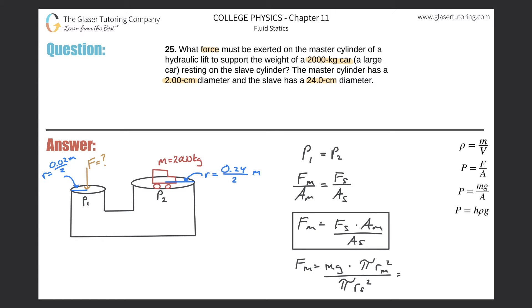All we have to do is now plug in the values. So the mass of the car is 2,000 kilograms, gravity is 9.8. We can actually cancel the π's because that'll simplify it a little bit. Then that will be multiplied by the radius of the master squared, so here we have 0.02 divided by 2, and that's squared, all over 0.24 divided by 2 squared.